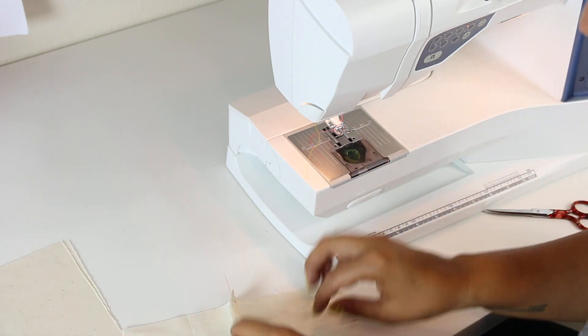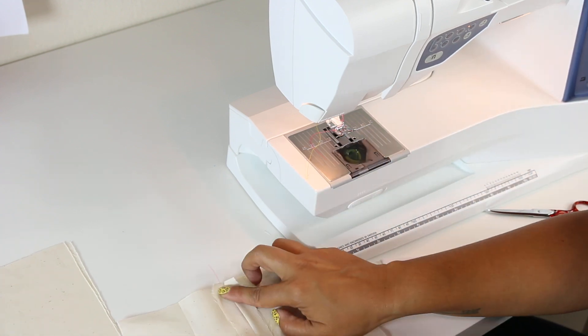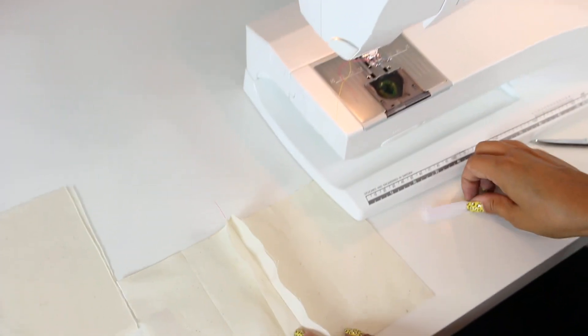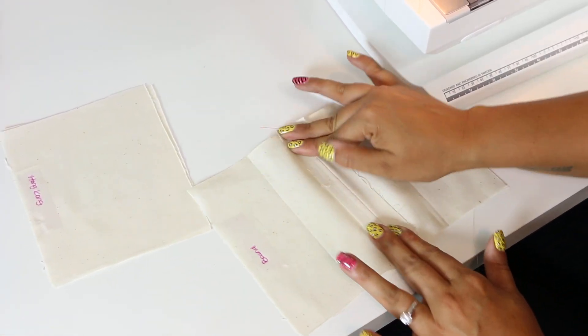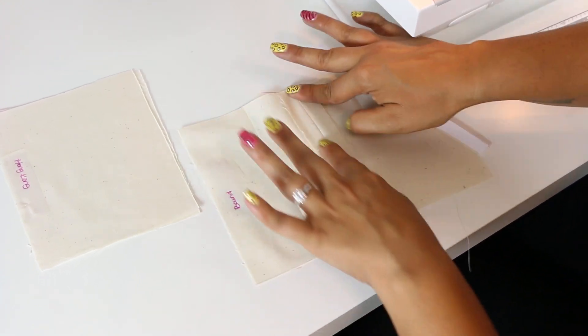What you would do is, in essence, bind this inside of your binding. You want to give it a good press if you're at your ironing table—I'm not.